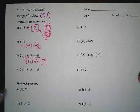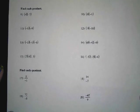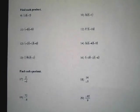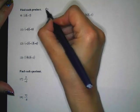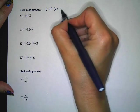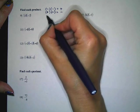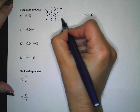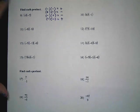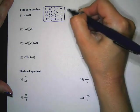We're going to switch from addition and subtraction to multiplication and then division. When multiplying, we have different rules: two negatives multiplied together give a positive; a positive times a negative gives a negative; a negative times a positive gives a negative; and two negatives multiplied together give a positive. These rules work for both multiplication and division.